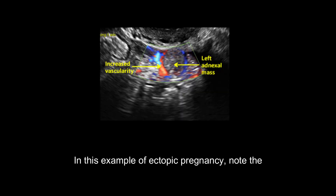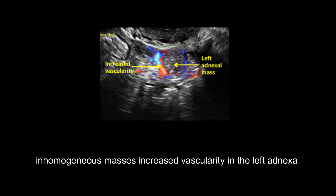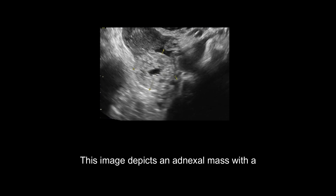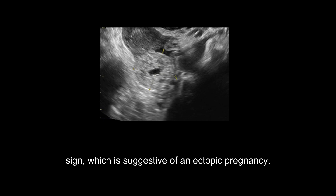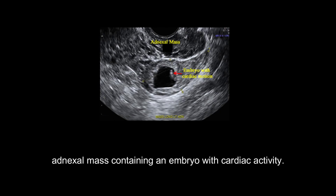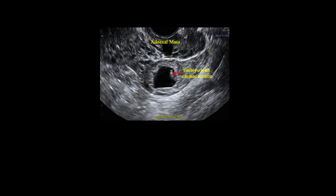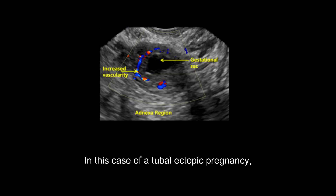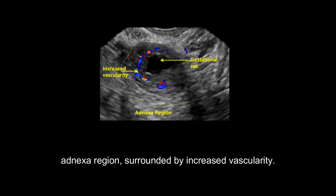In this example of ectopic pregnancy, note the inhomogeneous mass with increased vascularity in the left adnexa. This image depicts an adnexal mass with a central anechoic area with a hyperechoic ring (bagel sign), which is suggestive of an ectopic pregnancy. This image of an ectopic pregnancy demonstrates an adnexal mass containing an embryo with cardiac activity. In this case of a tubal ectopic pregnancy, an empty gestational sac is observed in the adnexal region, surrounded by increased vascularity.